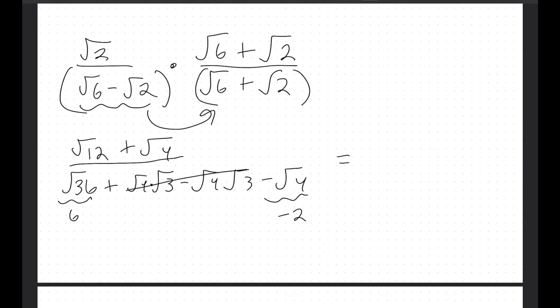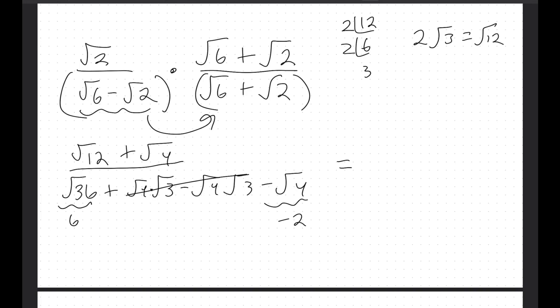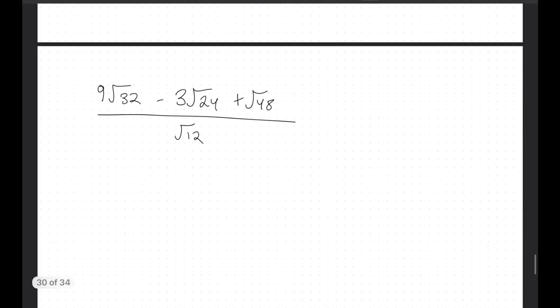And basically from there, we know that this will be 6 and this will be negative 2, so we will just have 4 on the denominator. And we know root 12 can be simplified into 2 root 3 equals root 12, and then root 4 is just going to be 2, so on the top we will have the 2 root 3 plus 2, all over just 4.